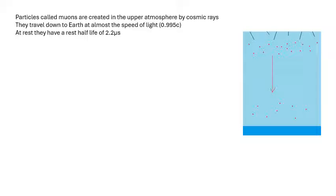An important experiment to know involves particles called muons. Cosmic rays from the Sun and space collide in the upper atmosphere, producing muons that travel down to Earth at about 0.995c — very close to the speed of light.